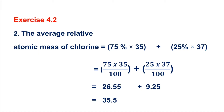That gives 26.25 plus 9.25, so the average relative atomic mass of chlorine is 35.5.